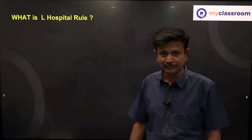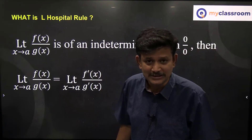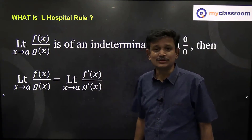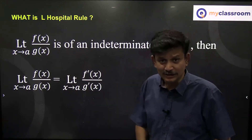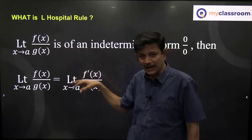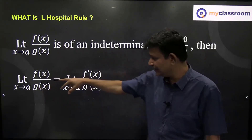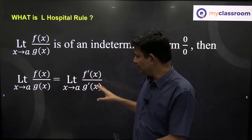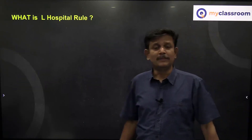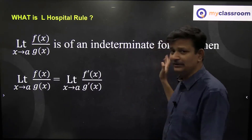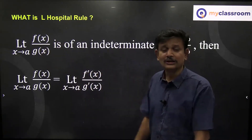So, when does L'Hôpital's rule fail? For a quick refresher: if you are evaluating the limit as x tends to a of f(x)/g(x), and both the numerator and denominator approach 0, that is the indeterminate form 0/0. Then this limit equals the limit of f'(x)/g'(x). This is also applicable in the infinity/infinity form — if f(x) and g(x) both tend to infinity, you can still apply L'Hôpital's rule.